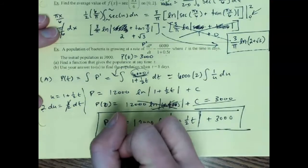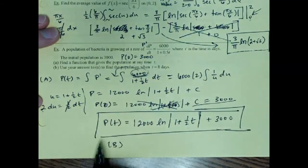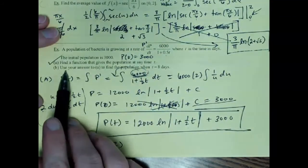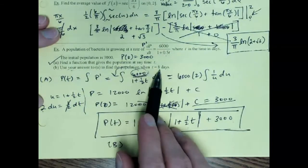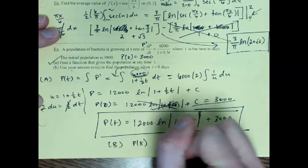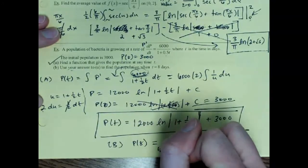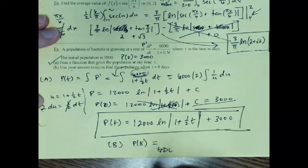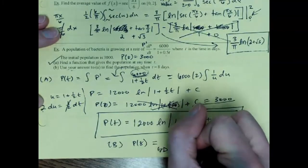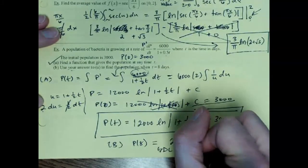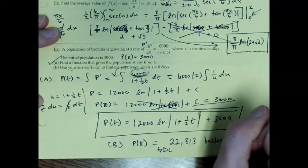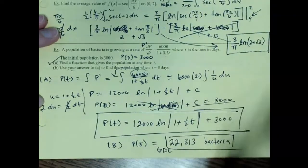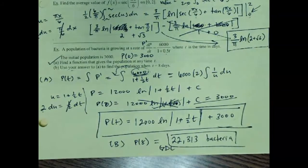Part b: use the function to find the population at t = 8. Just plug in 8 to P(t) = 12000 ln(1 + 0.5·8) + 3000. Using a graphing calculator, you'd get approximately 22,313 bacteria.